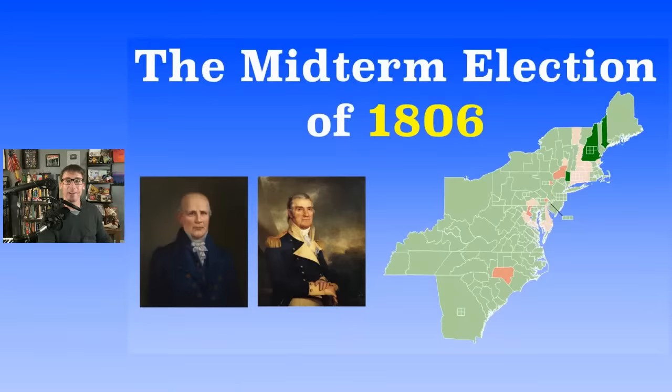In 1806, in the Senate there were 34 seats; 18 were needed for the majority. The Democratic-Republicans were in charge before and picked up two more seats, ending up with 22 seats. The Federalists lost two seats, only having nine. So the Democratic-Republicans had what's known as a supermajority — they could pass whatever they wanted to.